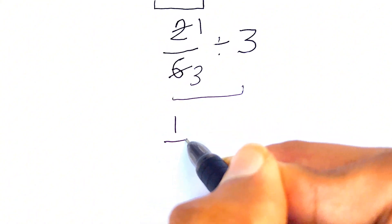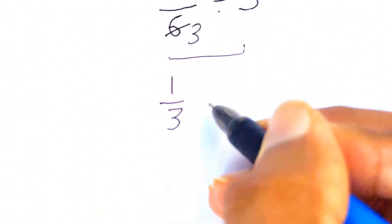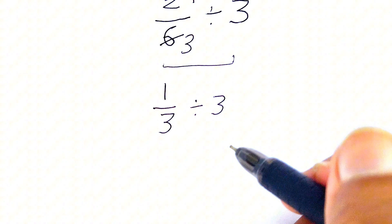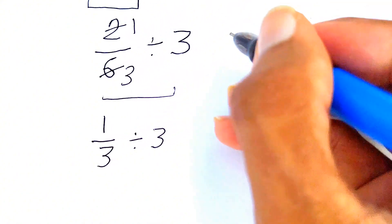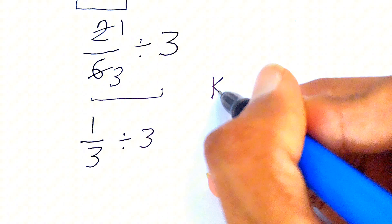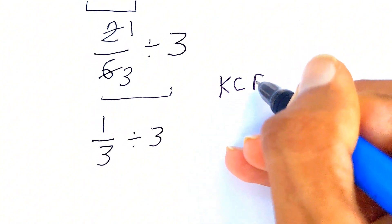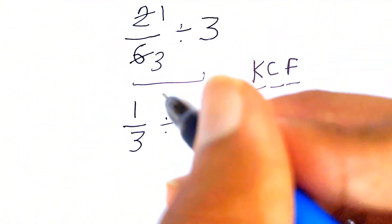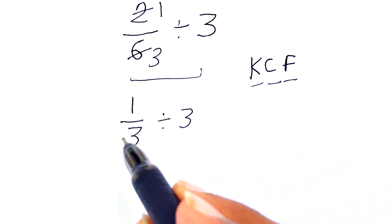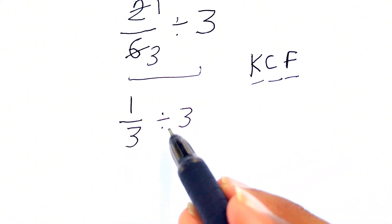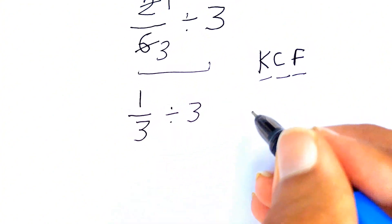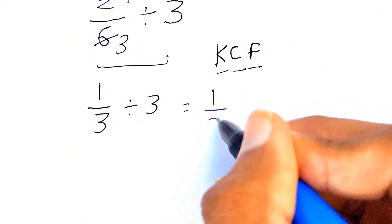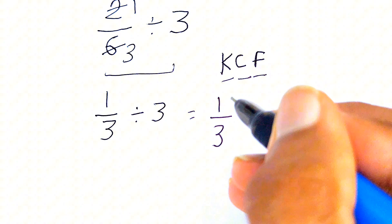Now here we are dividing fractions, so we need to use one rule you have heard about: it's called the KCF rule. It means K stands for keep, C stands for change, F stands for flip. In this expression, we need to keep this 1 over 3 as it is, we need to change this division sign, and flip this 3. We'll keep 1 over 3 as it is, change this division sign into multiplication, and flip this 3 that becomes 1 over 3.